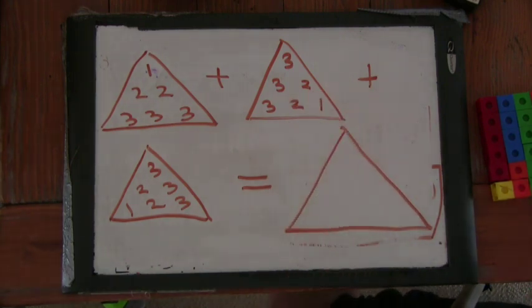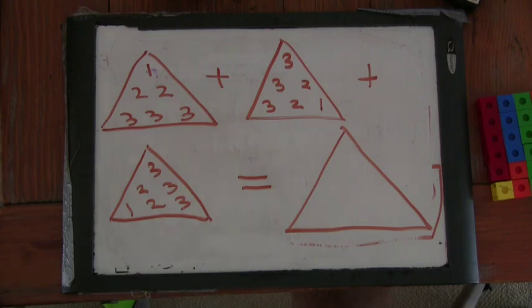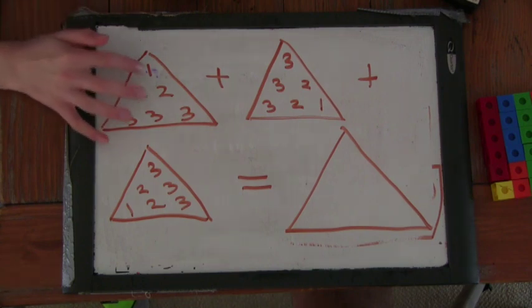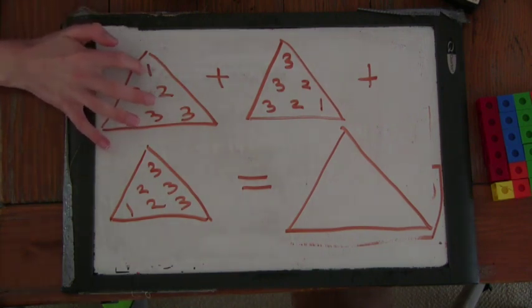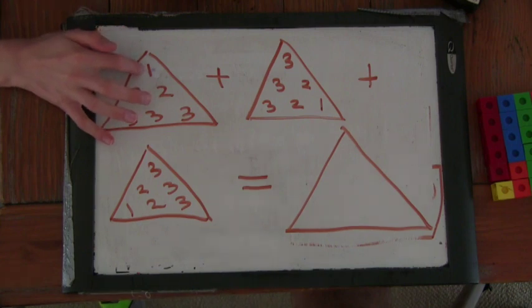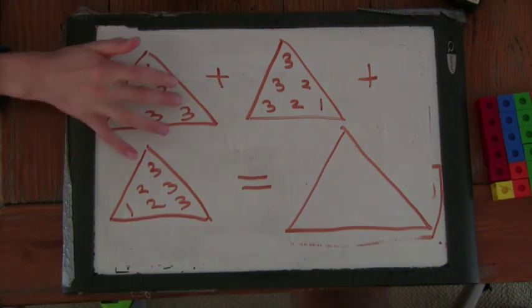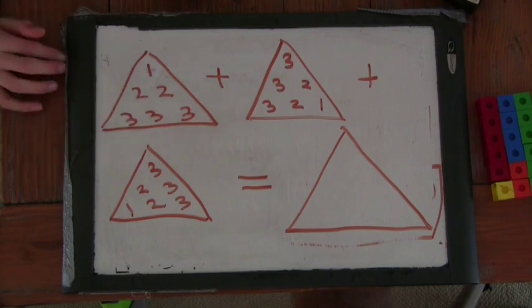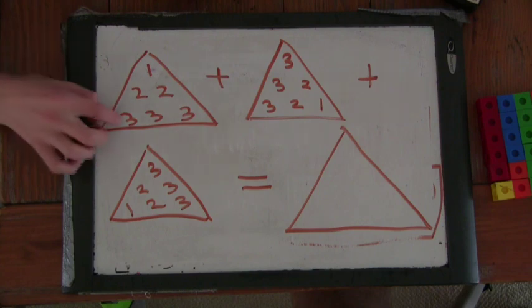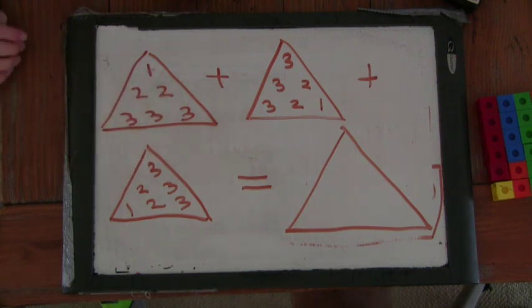Now, first of all, let me ask you a question. Why do these numbers in these triangles represent the sums of squares? Can you tell me? The one here represents one times one, two twos represents two times two, and three threes represents three times three. Okay, very nice.